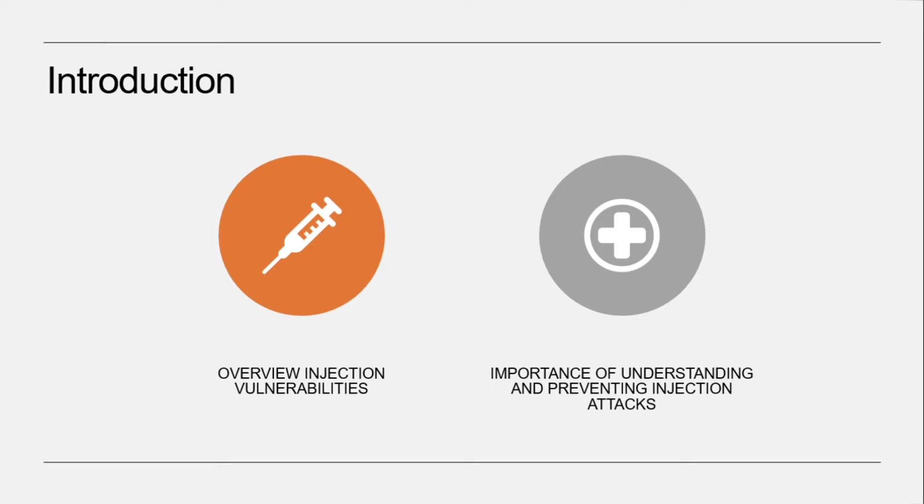The OWASP Top 10 is a report that lists the most dangerous web application security vulnerabilities and is updated on a regular basis to guarantee that the list always includes the top 10 most serious threats to businesses. Since the OWASP Top 10 was first introduced in 2003, injection has been ranked as its number one security risk to web applications in the 2010 to 2017 editions.